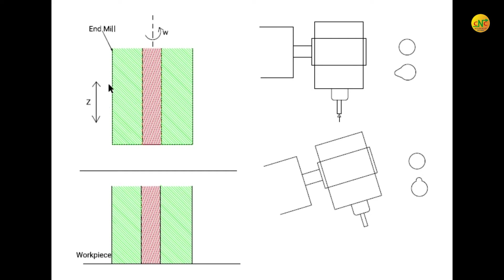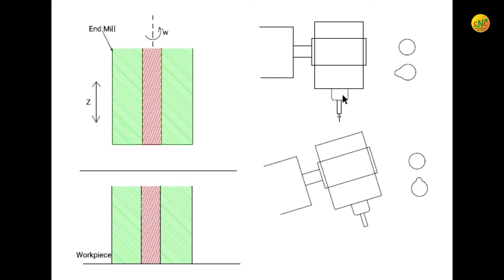When the tool tries to plunge into the workpiece, it is easily able to remove the material in the green zone, but it really struggles to remove material from the red zone. As you go down, there is a lot of force. Looking at this diagram of a typical spindle holding a tool, as it moves down, because the center cannot remove material easily, you experience a lot of force in this direction from the workpiece to the tool.